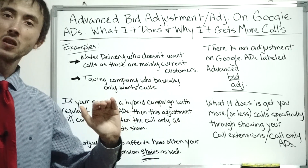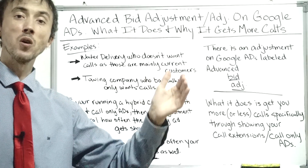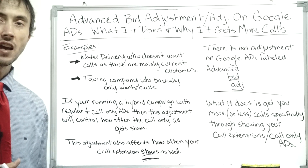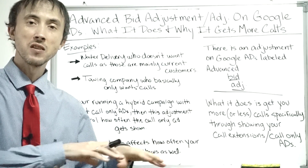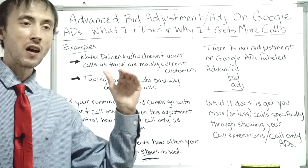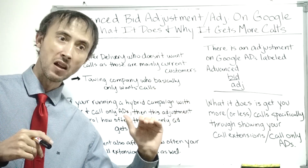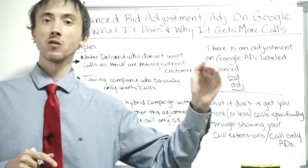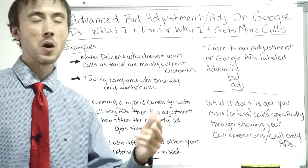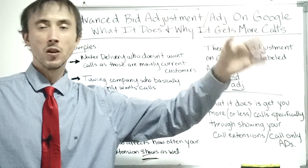In that scenario, we do a negative bid adjustment on the Advanced Bid Adjustment. Essentially, for people who look like they want to call, we're willing to bid less — whereas for people more likely to fill out the form, we bid more. You wouldn't just shut off phone calls entirely, because some percentage of callers are going to call regardless, and if they can't reach you they might call a competitor. So you still want to show up for them — just bid less.